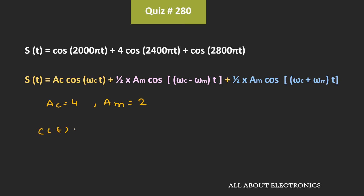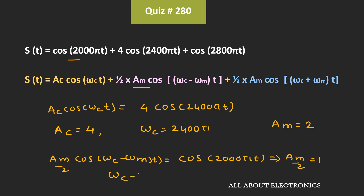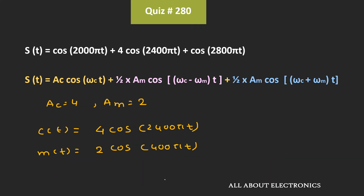That means the carrier signal C(T) is equal to 4 times cos(2400π*T), while the message signal M(T) is equal to 2 times cos(400π*T). Because here ωC − ωM is equal to 2000π, and since ωC is equal to 2400π, that means ωM is equal to 400π. So from this we can say that M(T) is equal to 2*cos(400π*T). Now, since we know the carrier signal and the message signal, we can find the power of each signal.